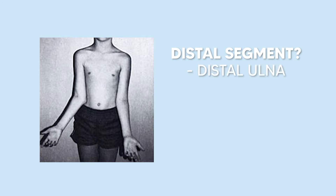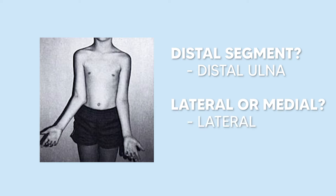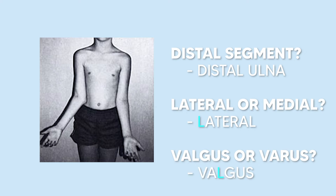Looking at this elbow: the first step is to find the distal segment, which in this case is the distal ulna. We then decide if it's angled more laterally or more medially. This one is angled more laterally, and the L in lateral reminds us of the L in valgus, so we know this is valgus — and it would be described as a cubitus valgus.